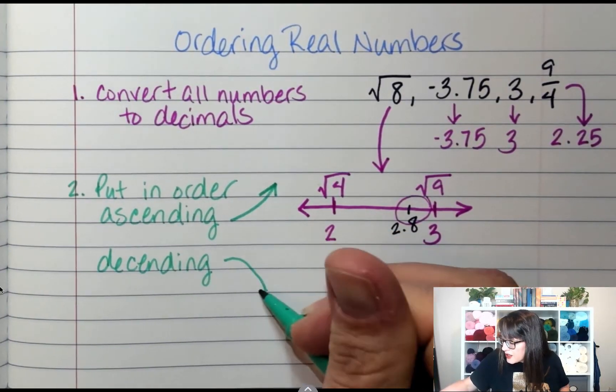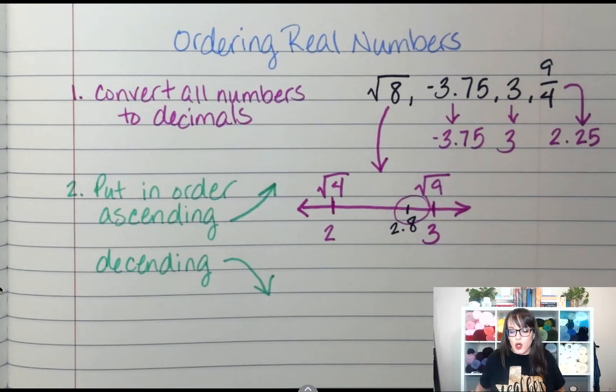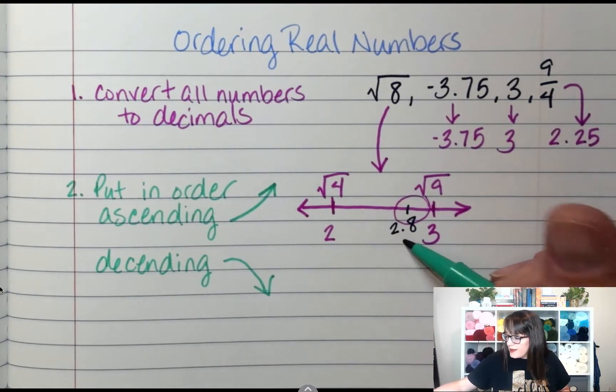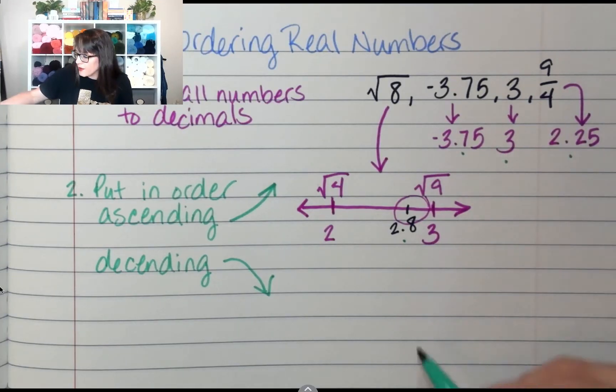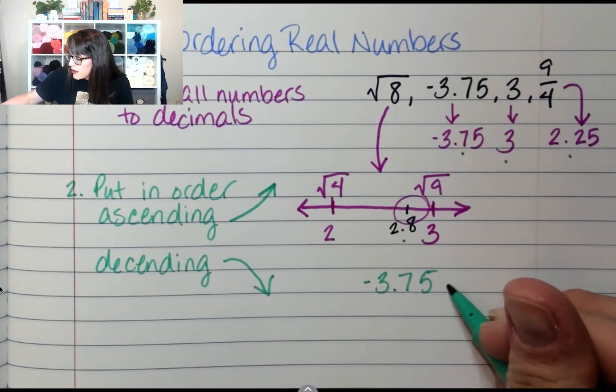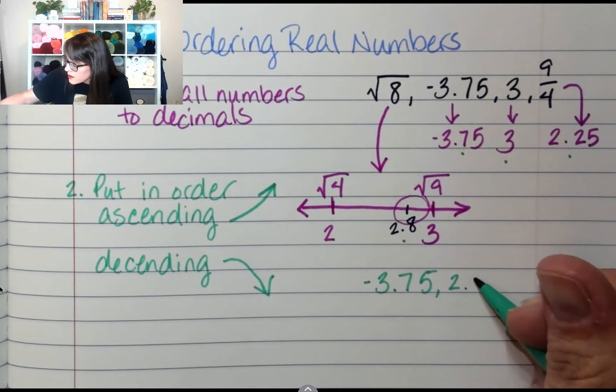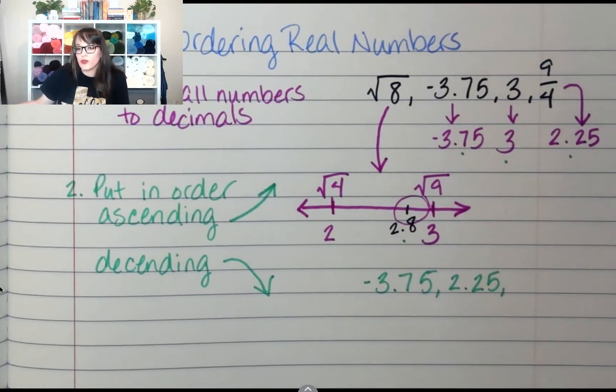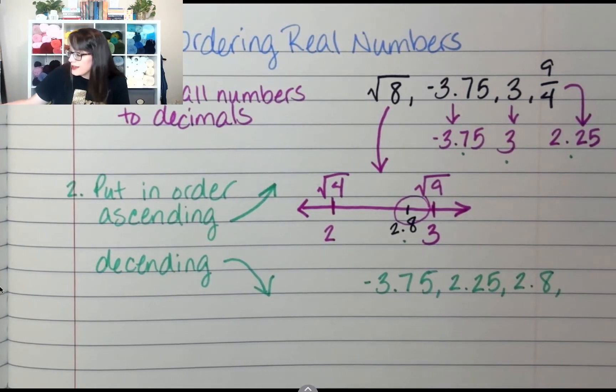So for this one, let's say put them in ascending order. Out of these four numbers, which one is the smallest? Negative 3.75. Which one is next to smallest? 2.25. Which one is next? 2.8. And lastly, 3.